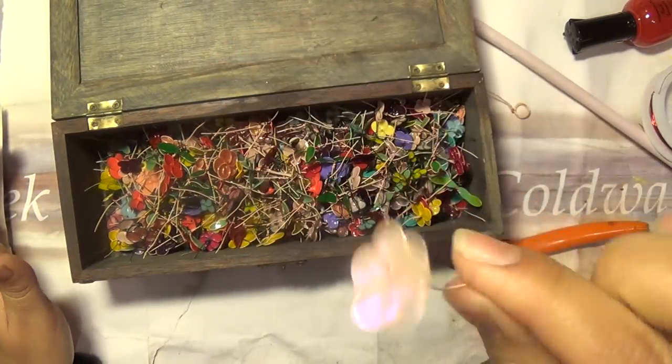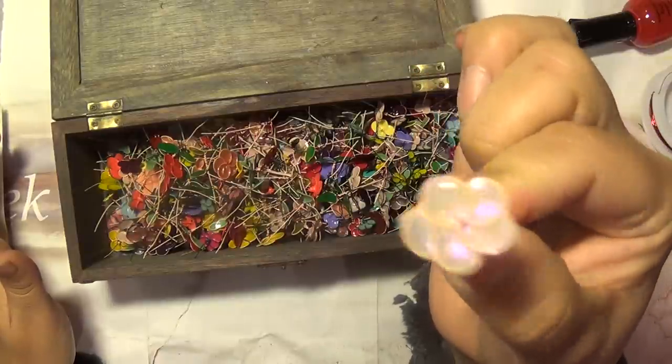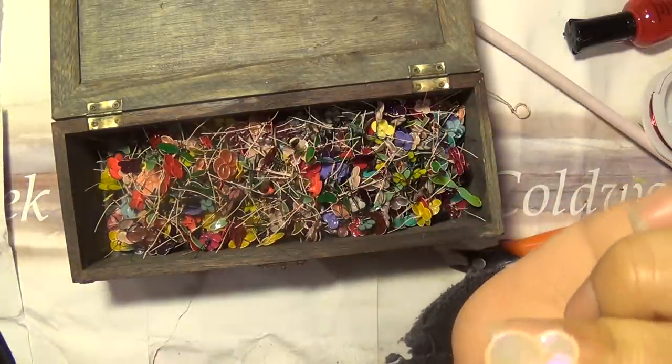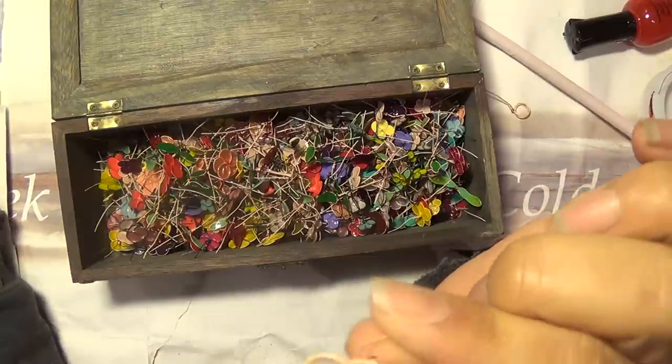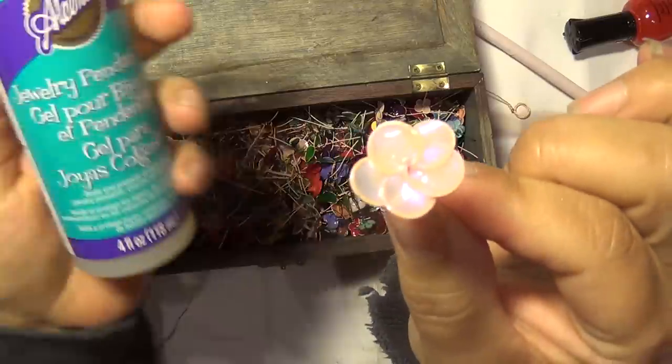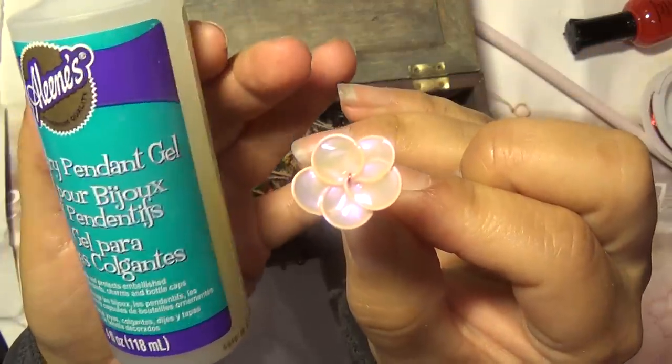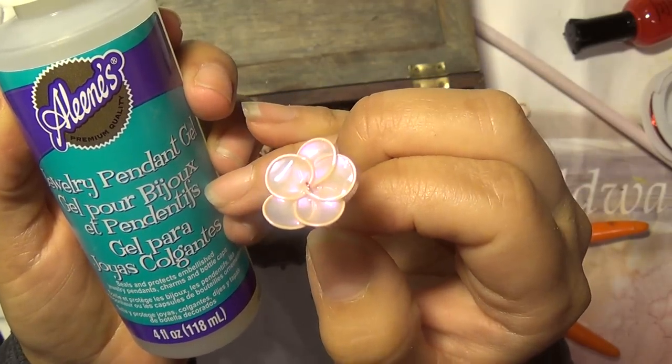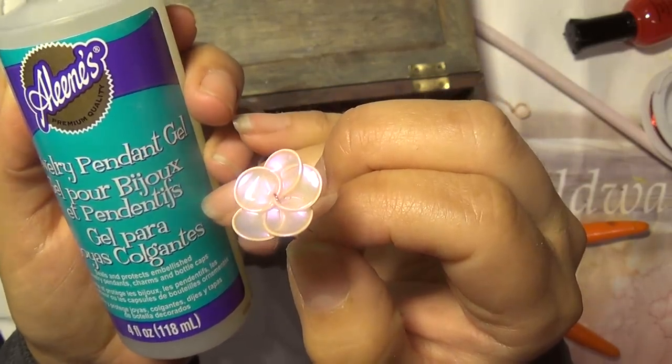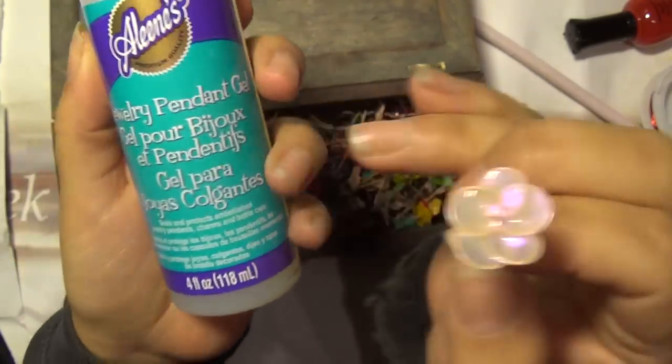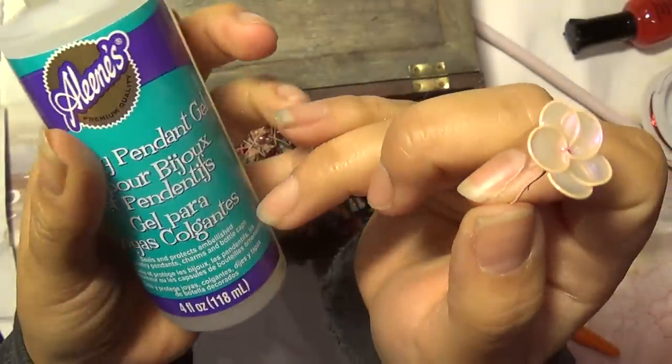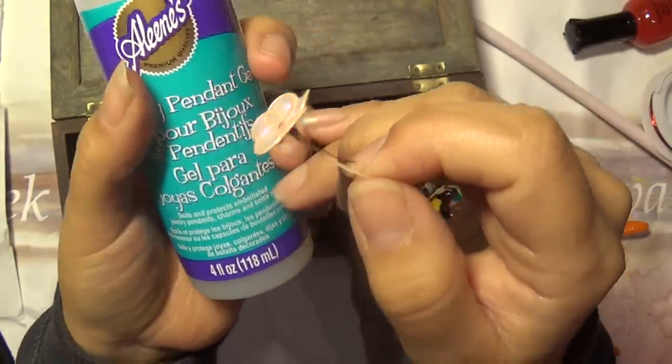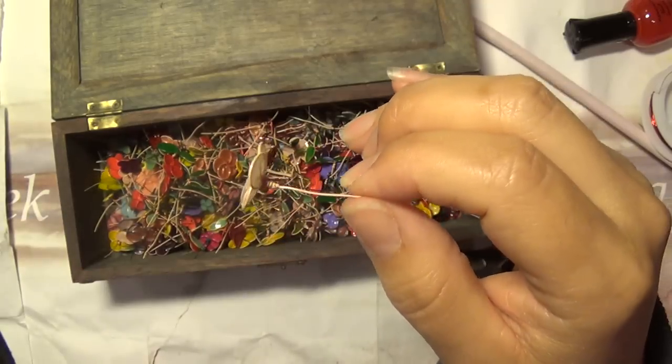Let me bring one up so that you can see what you're going to end up with. And that's just pretty. It's got a lot of glow. It is nail polish. I have coated them after they were nice and dry. I have coated them with jewelry pendant gel. It seals and protects embellishments, jewelry pendants, charms, and bottle caps. And it's by Aleene's.